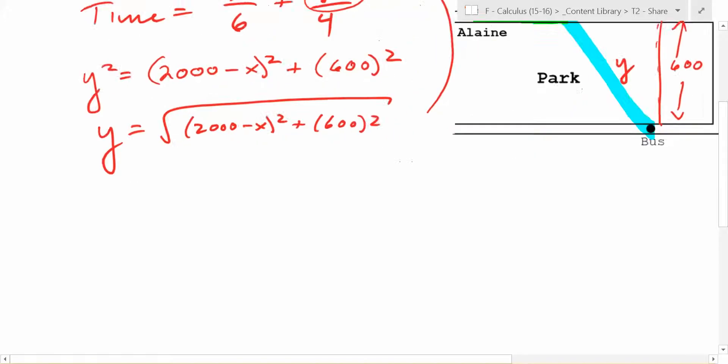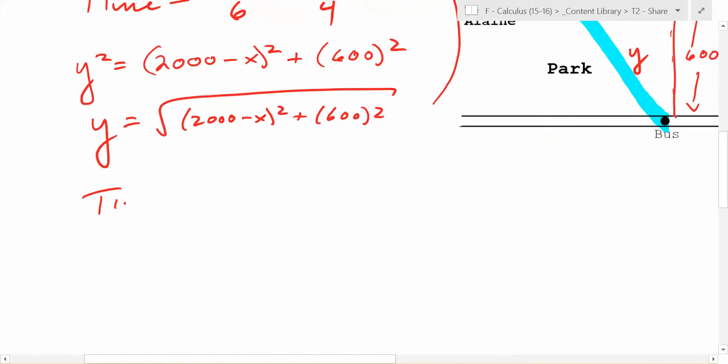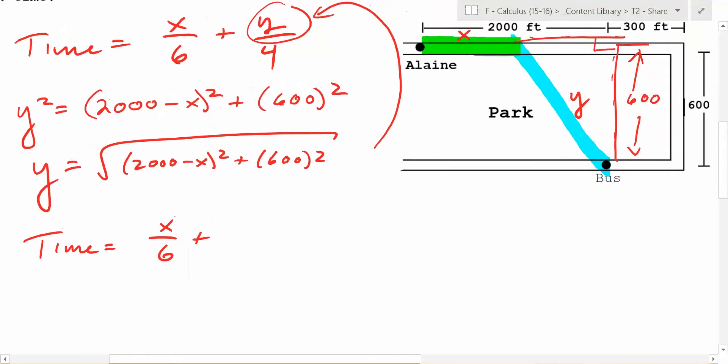They end up with time is equal to what? The amount of time it takes is equal to x over 6, plus what? Yeah, the square root of this thing, right? 2,000 minus x squared plus 600 squared, all square rooted, all over 4. So that's the time it takes you to follow this path.